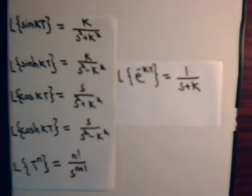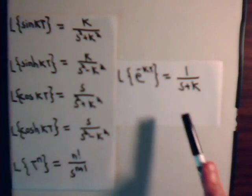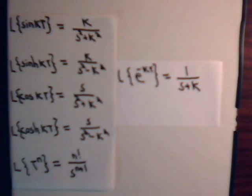In earlier videos in our series, we derived the Laplace transforms of just some basic functions. The sine of kt, the hyperbolic cosine of kt, the cosine of kt, t raised to some exponential power - it's n factorial divided by s to the n plus 1. Or the Laplace transform of e to the minus kt is 1 over s plus k.